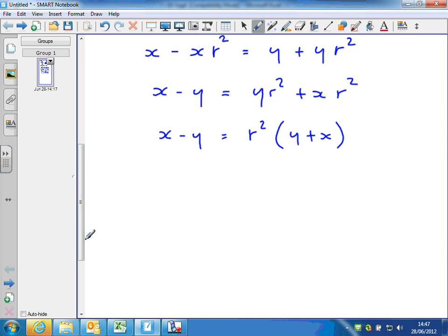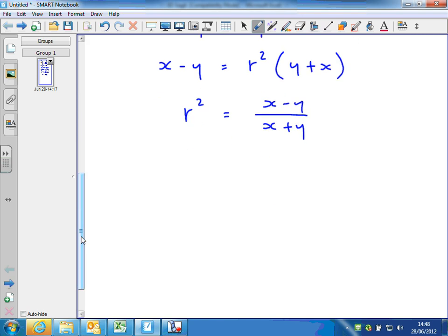And finally divide both sides by y plus x. So writing r squared on the left, x minus y over x plus y. And then square root to get r. So r equals the square root of x minus y over x plus y.